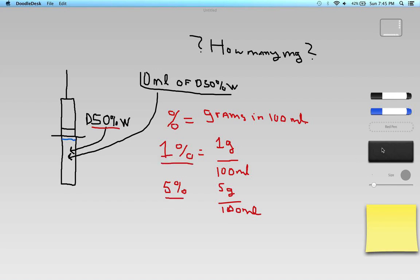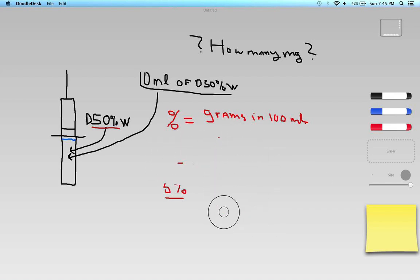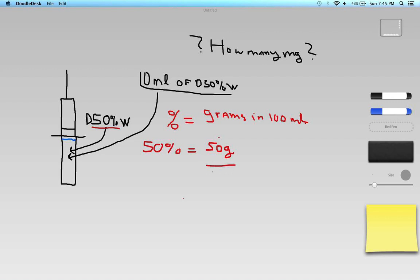The 100 milliliters never changes. It's always grams out of 100, and the number of grams is the number on the percentage here. When we're talking about 50% dextrose, 50% dextrose is going to be how many grams in 100 milliliters? Well, it's 50%, so 50% is going to equal 50 grams in 100 milliliters.